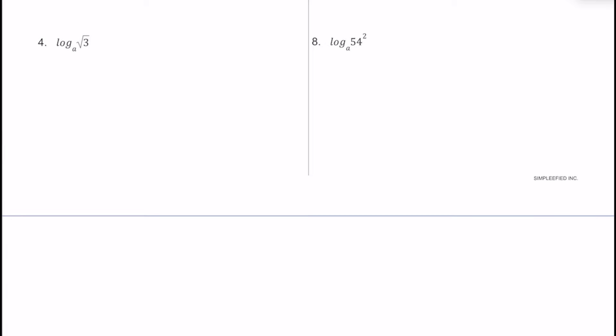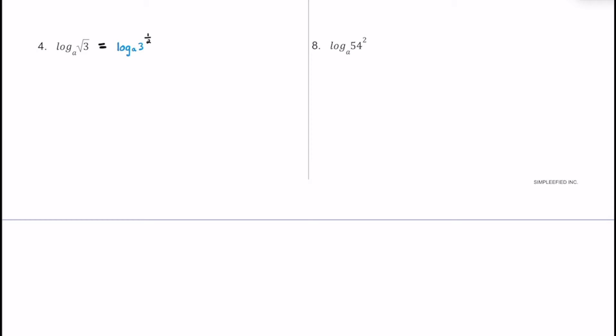For number 4, we have log base a of the square root of 3. We can rewrite radicals using a rational exponent, so the square root of 3 becomes 3 to the 1 half power. Using the power rule, we bring the 1 half down in front, giving us 1 half times log base a of 3. Substituting in the approximation, this is 1 half multiplied by 0.5646, which gives us about 0.2823.